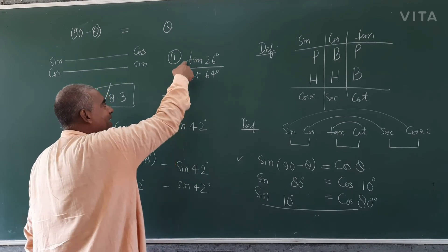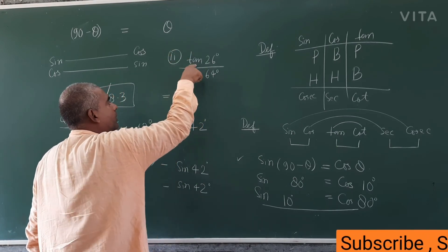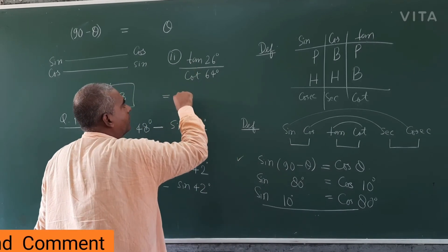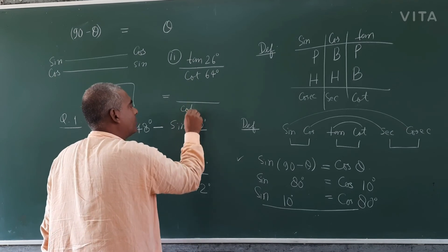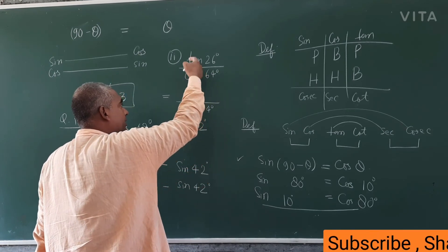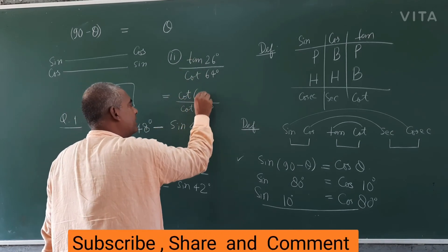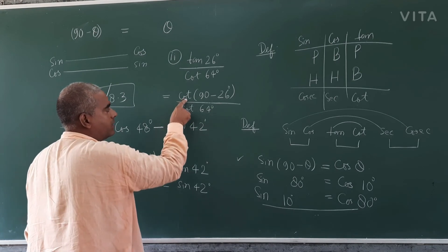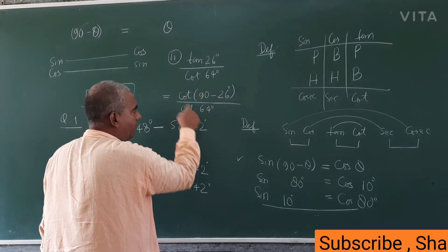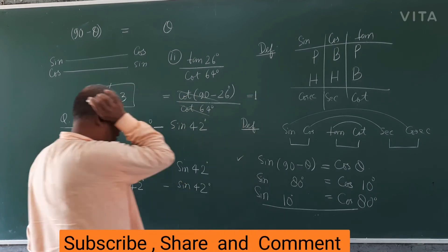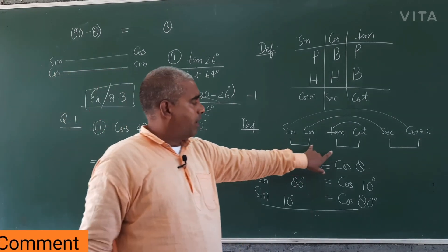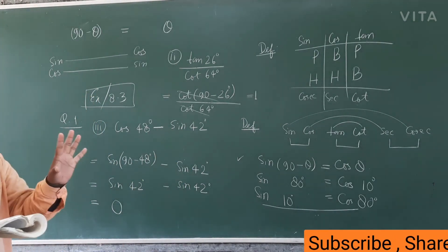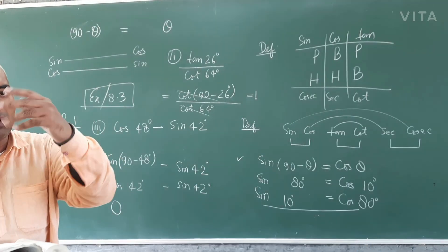But you have to prove it, so you change one at a time. Using tan(90 - θ) = cot θ, keep cot 64° as it is, and change tan 26° to cot(90 - 26) = cot 64°. So you get cot 64° upon cot 64°, which equals 1. These questions are just for practice. Better questions are in Question 2, 3, and 4, which I will cover in the next video — please keep watching.